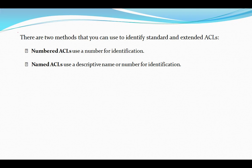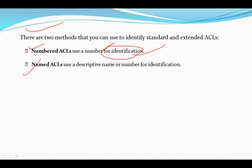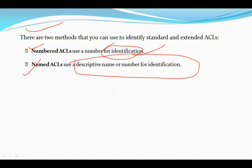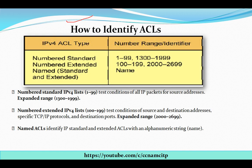Now we will talk about the methods to identify standard and extended ACLs. The first method is numbered and the second one is named. In numbered ACLs, a number is used for identification — a specific number. In named ACLs, a descriptive name or number is used for identification, where we can add a description, or it may use both a number and a name.